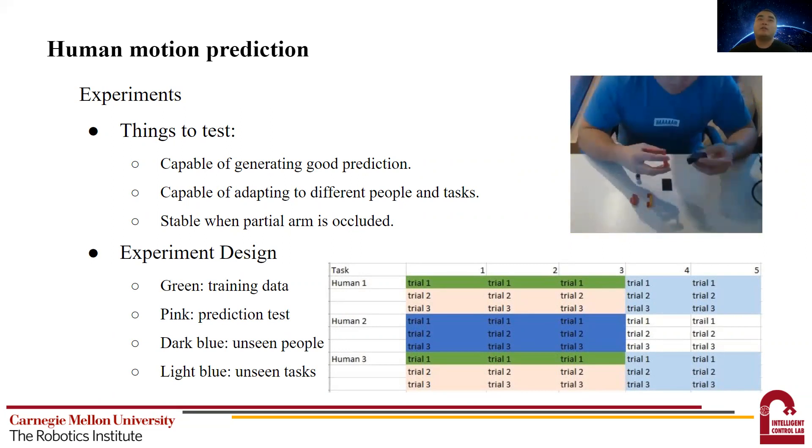This table shows how we use the data to test our method. The data includes five lego tasks and three human subjects. Each human did each task for three trials. We use the green part to train our model. We use the pink part to verify the capability of usual prediction. We use the dark blue part to test adaptability on unseen humans. And we use the light blue part to test for unseen tasks.